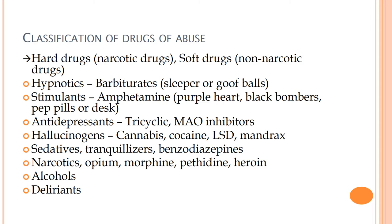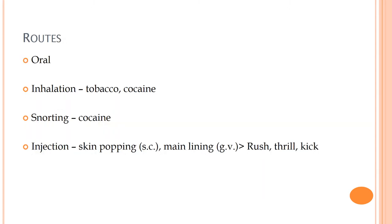You need to remember the terms 'hard drug' and 'soft drug,' and your basic pharmacological classification is sufficient for the rest. Routes of drug administration include oral, inhalation, snorting, and injection. Skin popping refers to subcutaneous injection, while 'shooting' or 'mainlining' refers to intravenous injection.